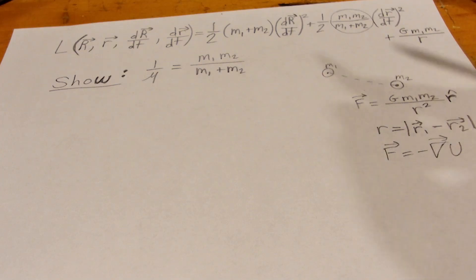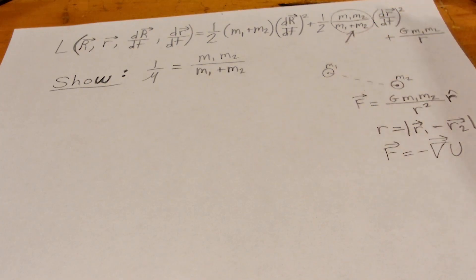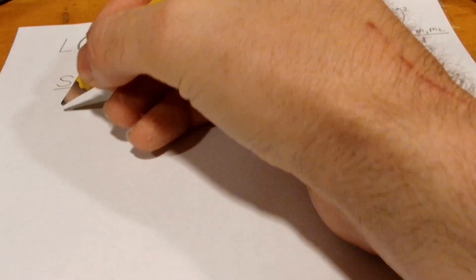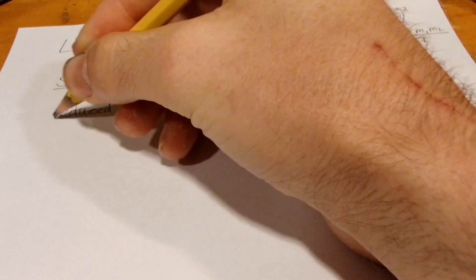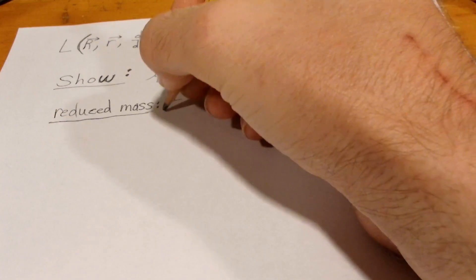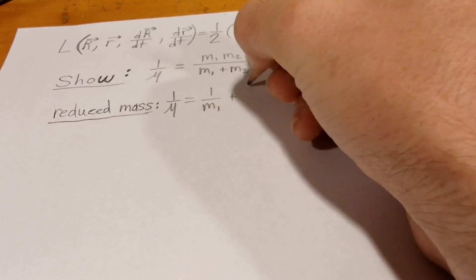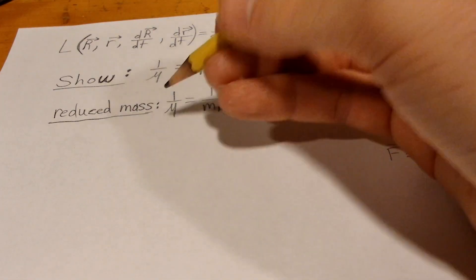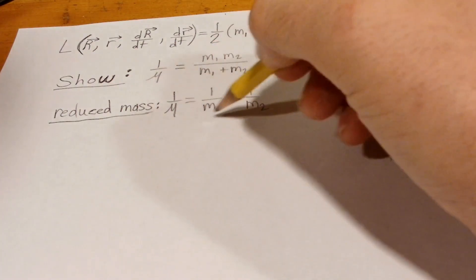And today we're going to show that this part right here, that this is equal to the reduced mass of this system here. And we know the reduced mass, one over mu is equal to 1 over m1 plus 1 over m2. And we want to be able to show this here is equal to that.